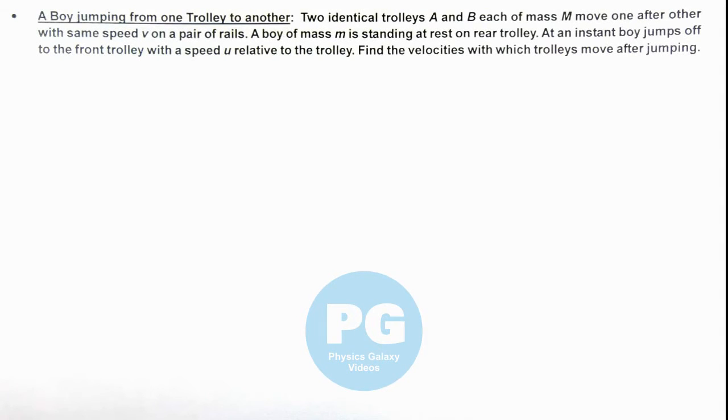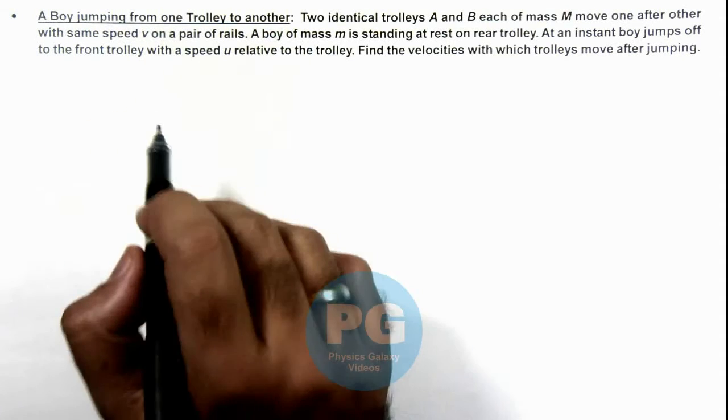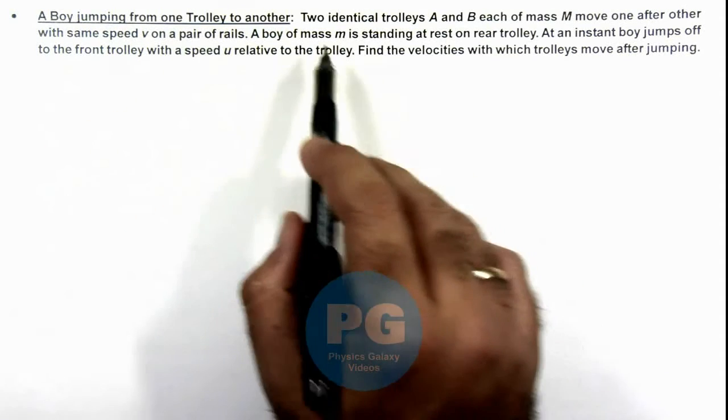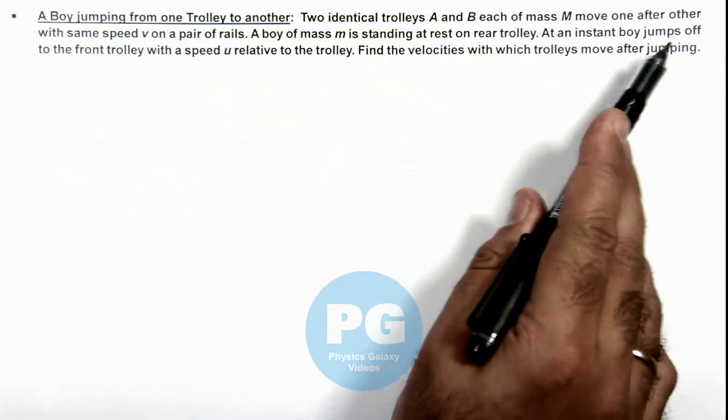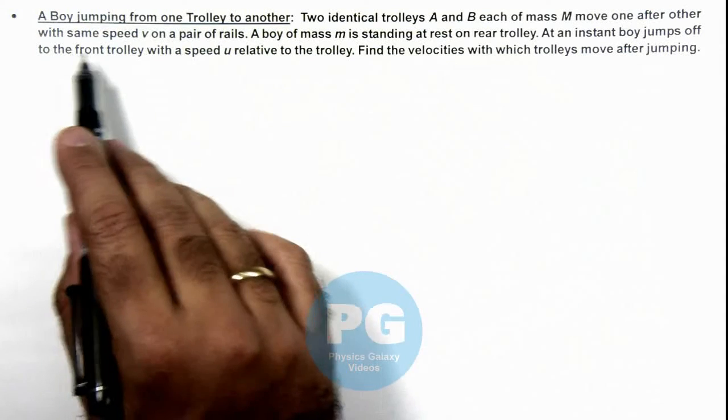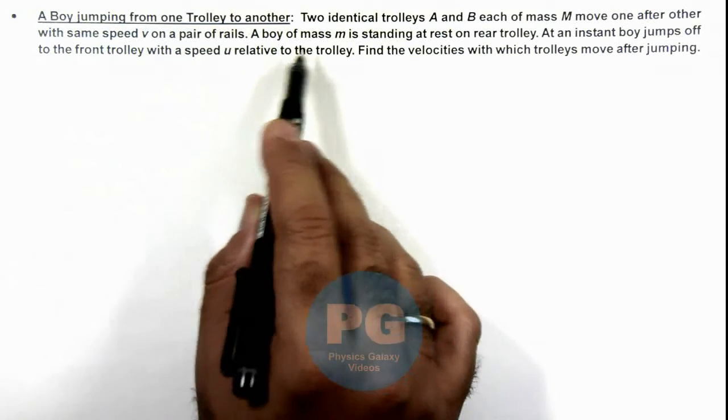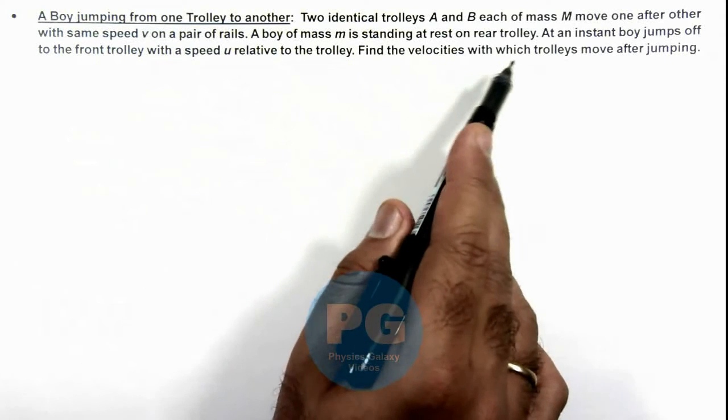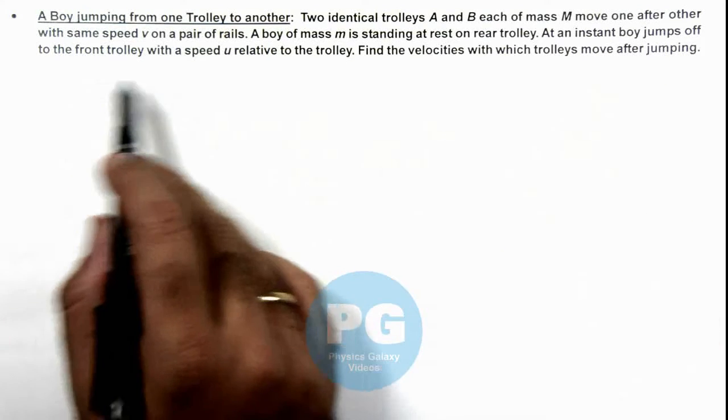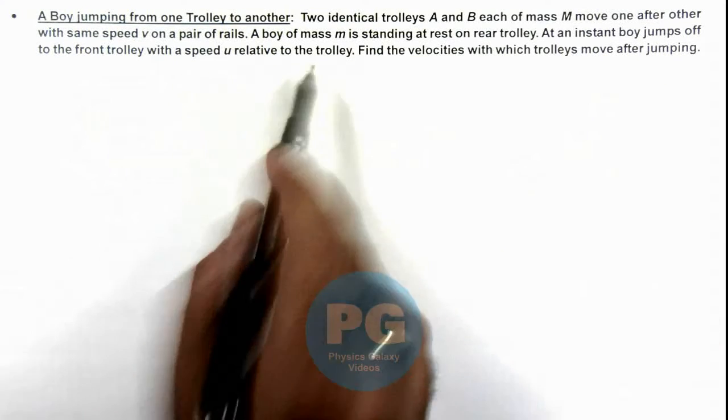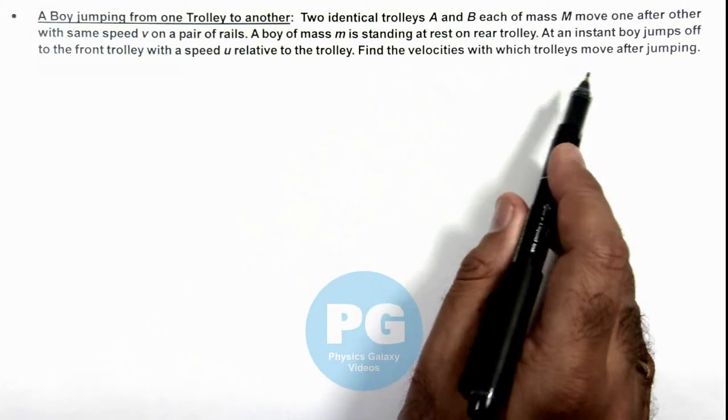In this illustration, we'll discuss a situation when a boy is jumping from one trolley to another. We are given two identical trolleys A and B, each of mass M, moving one after another with same speed v on a pair of rails. A boy of mass m is standing at rest on the rear trolley. At an instant, the boy jumps off to the front trolley with speed u relative to the trolley. We are required to find the velocities with which the trolleys move after jumping.